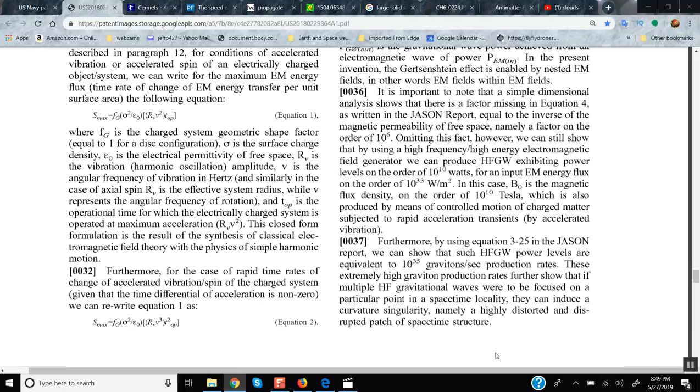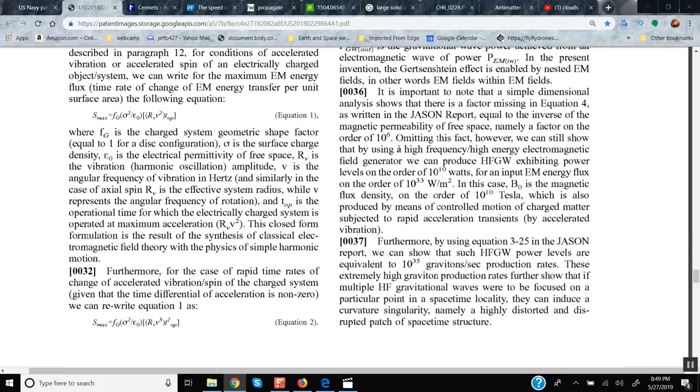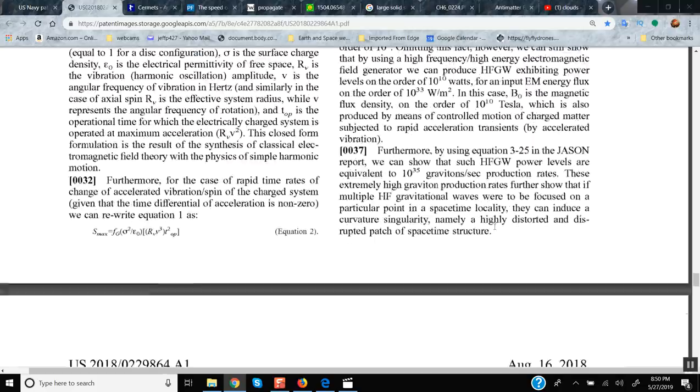It is important to note that the simple dimensional analysis shows that there is a factor missing in equation 4, which I didn't show, written in the Jason report, which I didn't show because there's a lot to this document and I already spent 23 minutes on this. That, admitting the fact that it still at high frequency, high energy electromagnetic field generator, we can produce high frequency gravity waves exhibiting power levels at the order of 10 to the 100 to the 10th power, which is basically 100 billion watts, on the order of a magnetic flux density in the order of 10 to the 10 teslas, which produces gravitons.